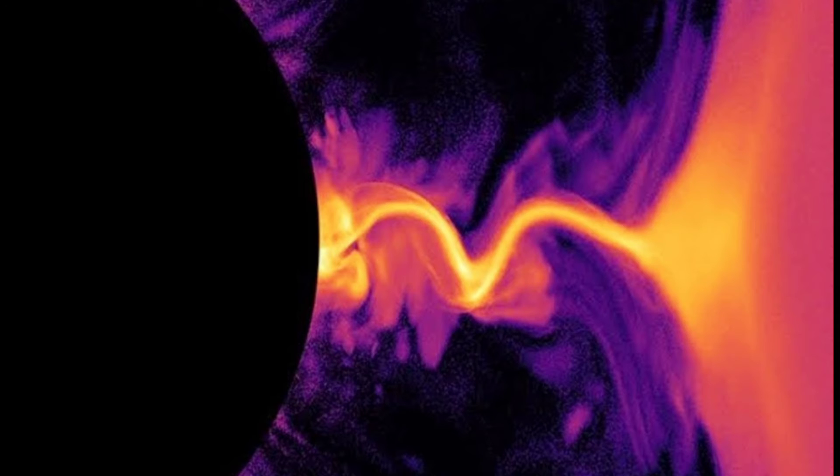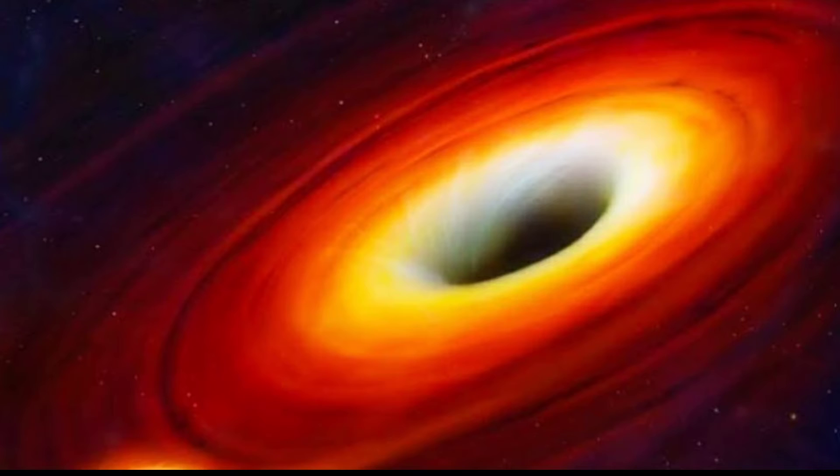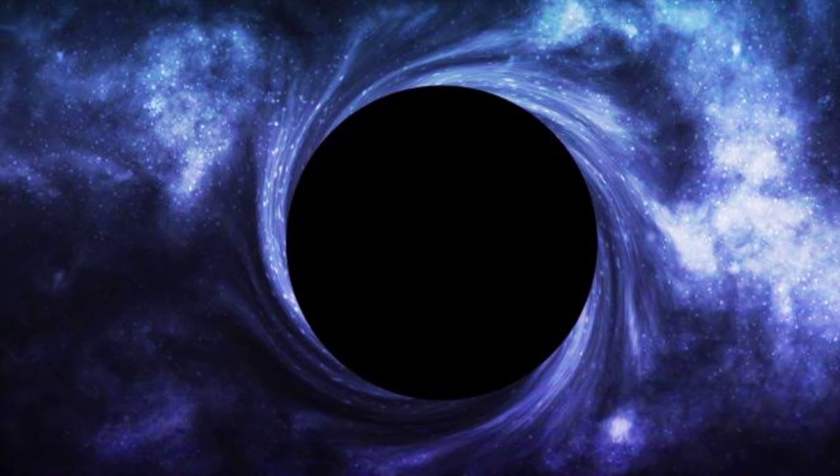Black holes can form in many ways, and larger ones can have 10 to a million times the mass of our sun. Some black holes trap more and more material as their mass increases.